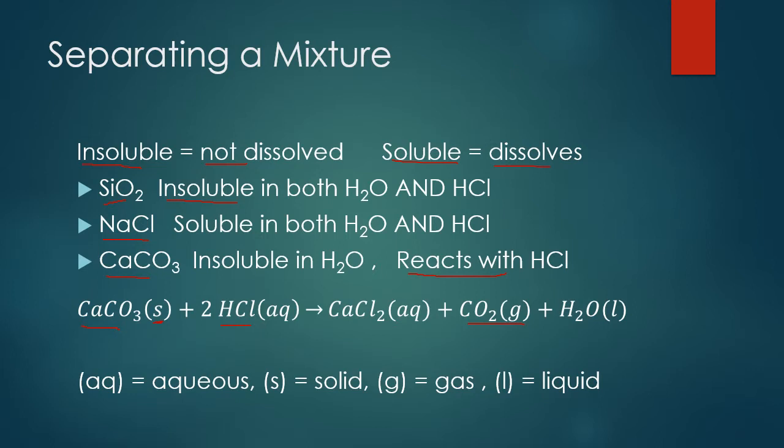What are the other products that result from adding hydrochloric acid to calcium carbonate? We're going to get water as a byproduct, which is a liquid, and calcium chloride. Calcium chloride has this AQ symbol by it, which stands for aqueous, meaning calcium chloride is dissolved or soluble in the water. We're going to use these characteristics of these three solids to separate them.